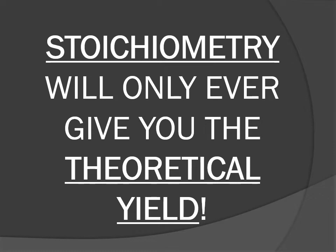Stoichiometry will only ever give you a theoretical yield — it's doing the calculation part. It is not going to give you your actual yield; you have to do the experiment to get that. Stoichiometry gives your ideal situation based on the math, giving you your theoretical yield. If you want to know your actual yield, you need additional data — either do the experiment yourself or get data from someone who has.